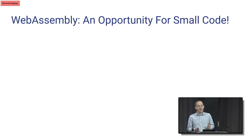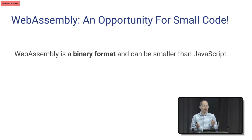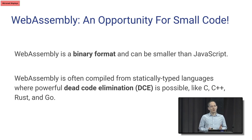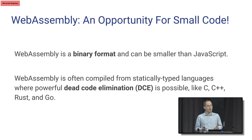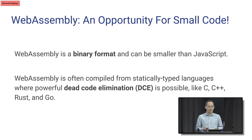The cool and exciting thing with WASM in this context is it's an opportunity to have smaller code than we used to in many contexts. In particular, WebAssembly is a binary format, so it's more compact than JavaScript because of that property. WebAssembly is also usually compiled from languages that are statically typed and have good dead code elimination — DCE — things like C, C++, Rust, and Go. These languages at compile time have a better idea what code paths are going to be used than a more dynamic language like JavaScript, so they can do a better job of getting rid of things you don't need.